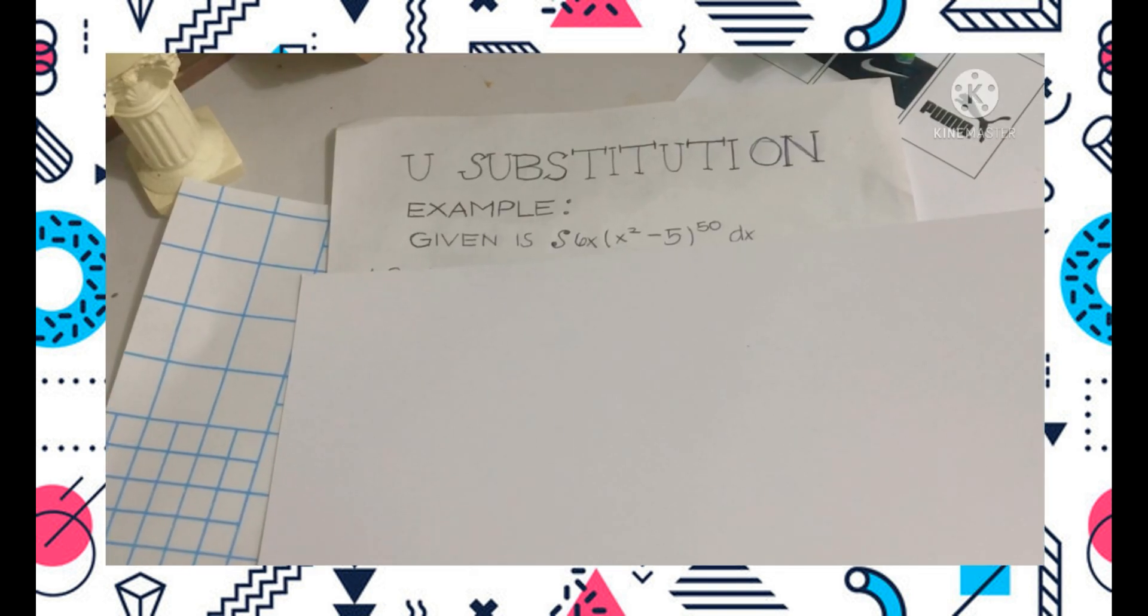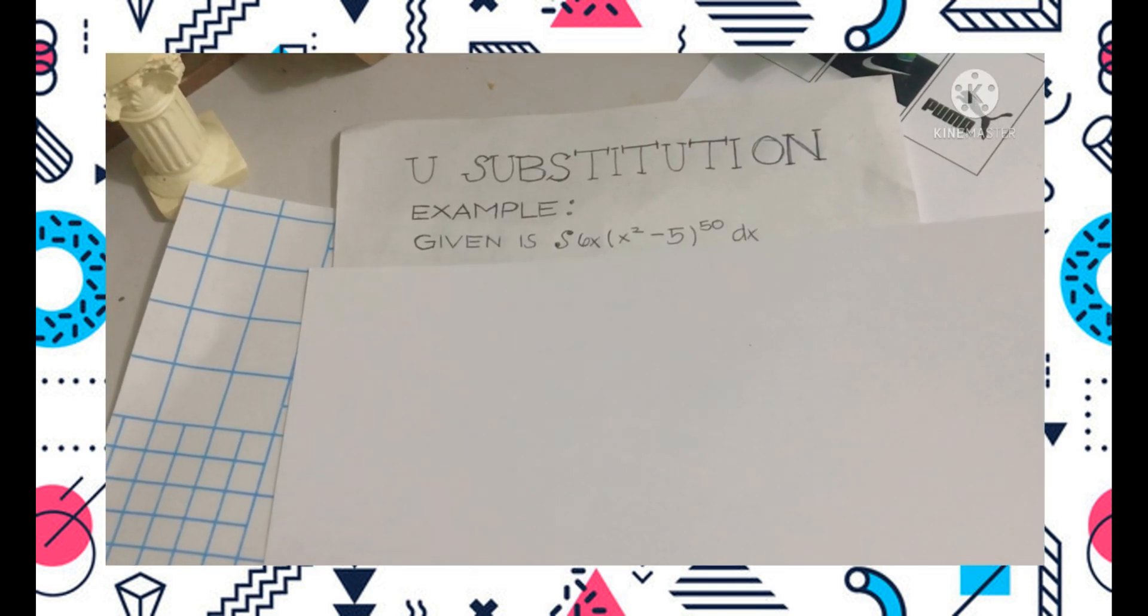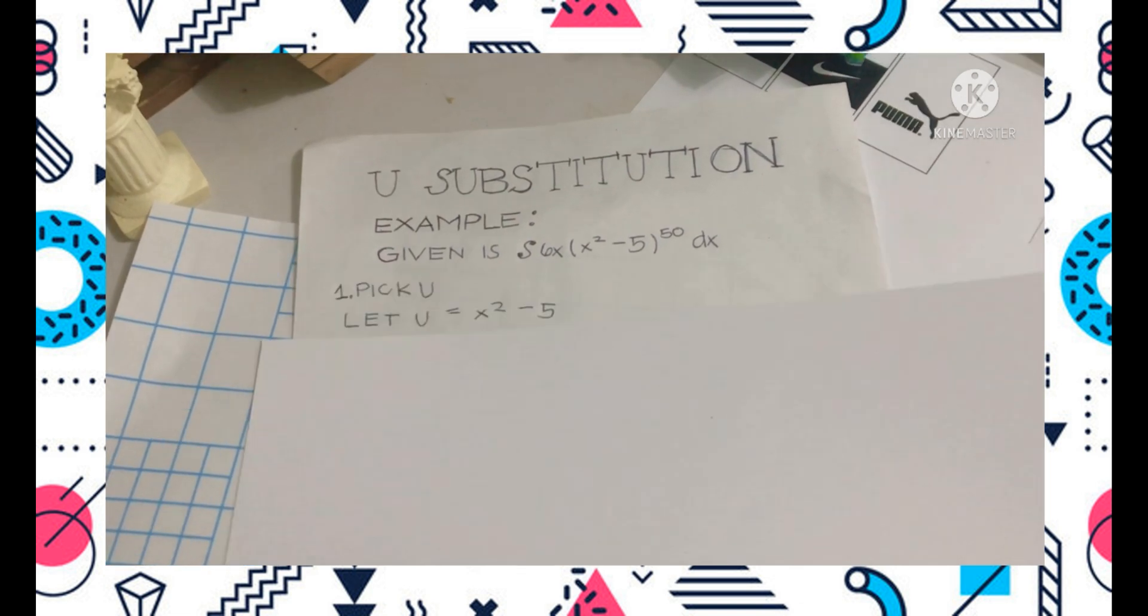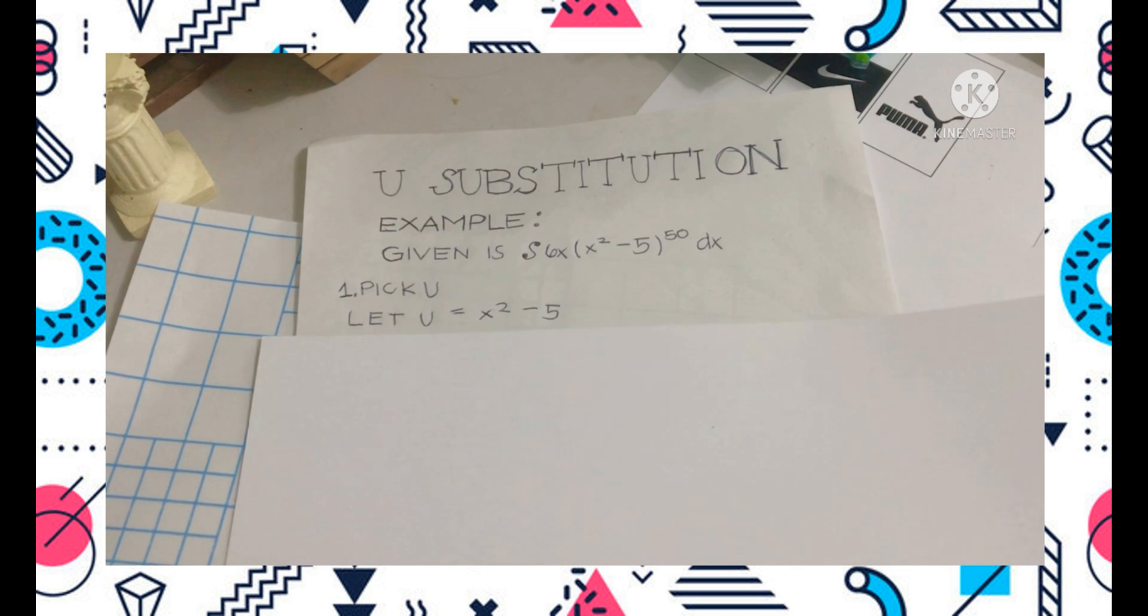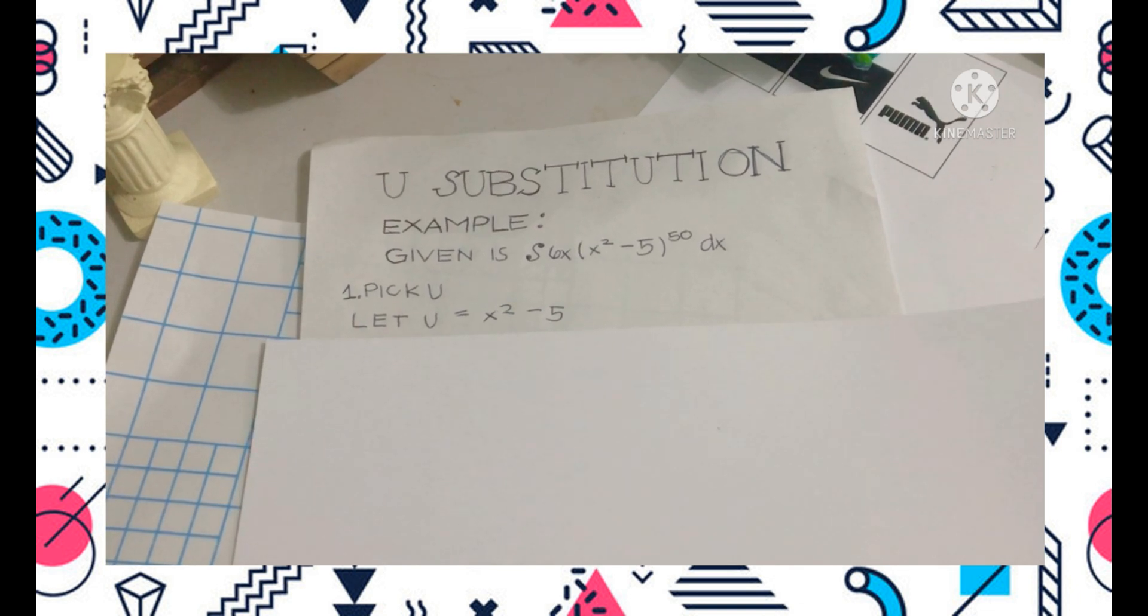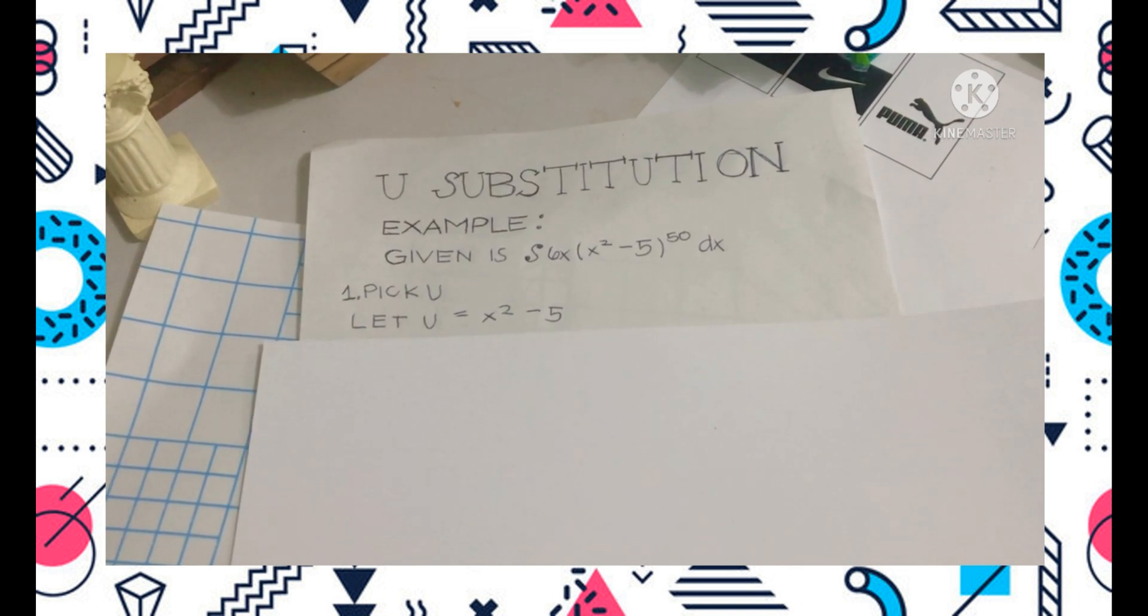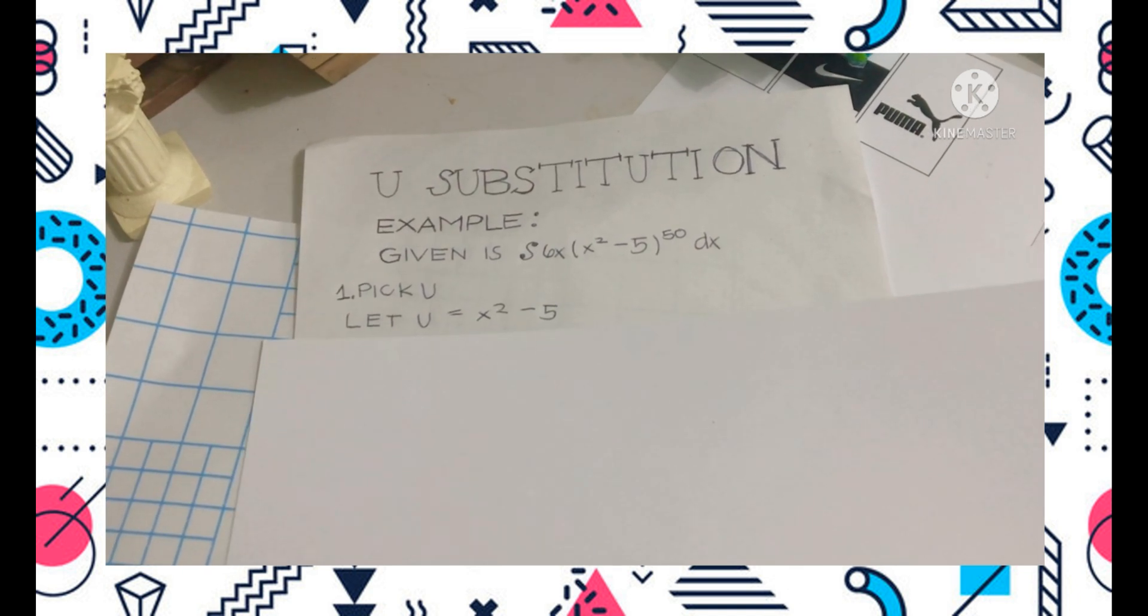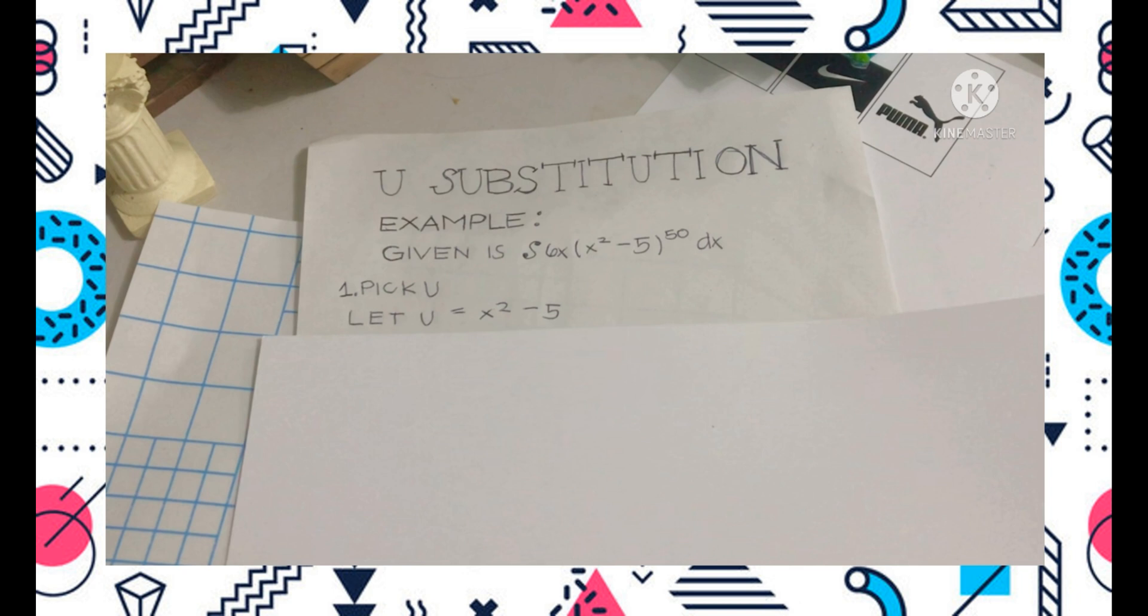There are five steps to remember in doing or solving u-substitution. First is pick u. In the given, we can pick x raised to 2 minus 5. If we notice, the remaining variables are 6x and dx.